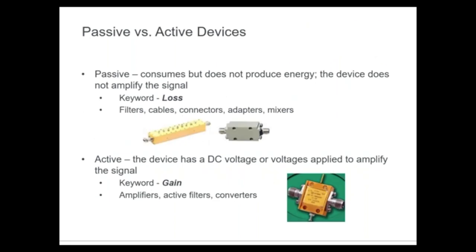Passive versus active devices: passive devices consume energy — they don't generate energy, so they attenuate the signal going through. We associate insertion loss with the transmission measurement of passive devices. For active devices, we apply a DC voltage and typically get amplification. If it's a good amplifier, we'll get gain associated with the transmission measurement. So one has gain because it has DC bias; the other does not — it has loss.